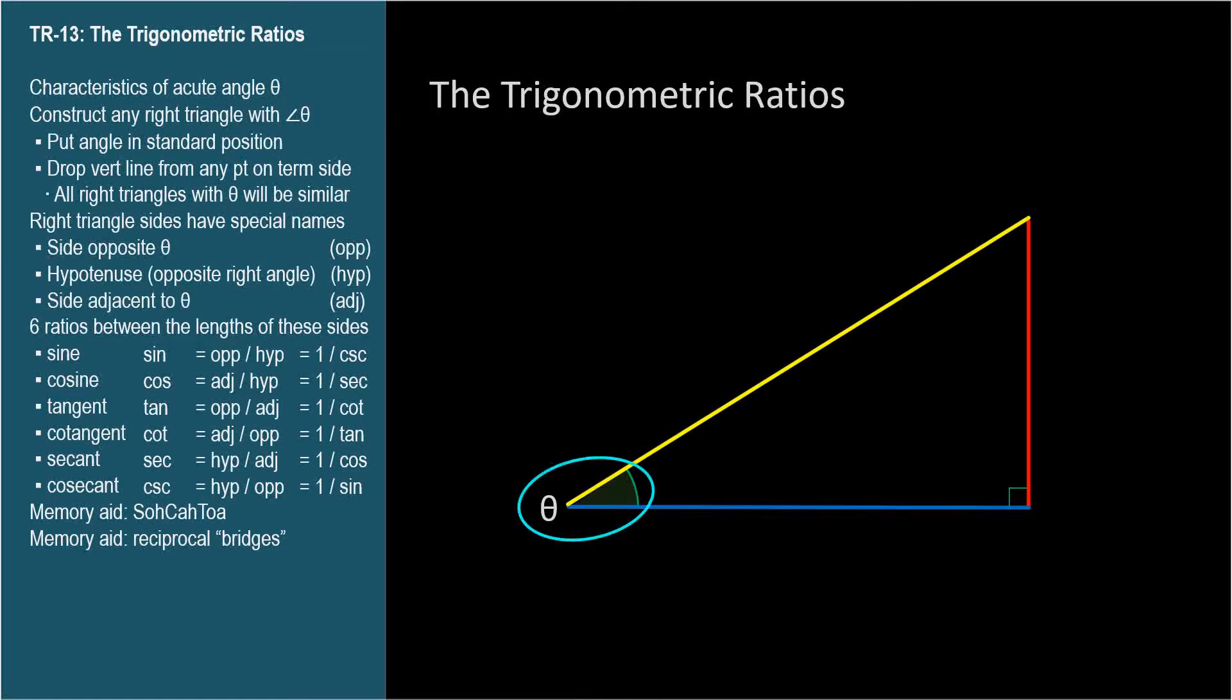These three colored sides have names from the perspective of angle theta. The red side that's directly opposite the triangle from theta is called the opposite side, usually abbreviated OPP. The yellow side is called the hypotenuse, usually abbreviated HYP. The hypotenuse is always the longest side of a right triangle, across from the right angle, as we covered in TR-07. And the blue side adjacent to theta is called the adjacent side, ADJ, because it's adjacent to theta.